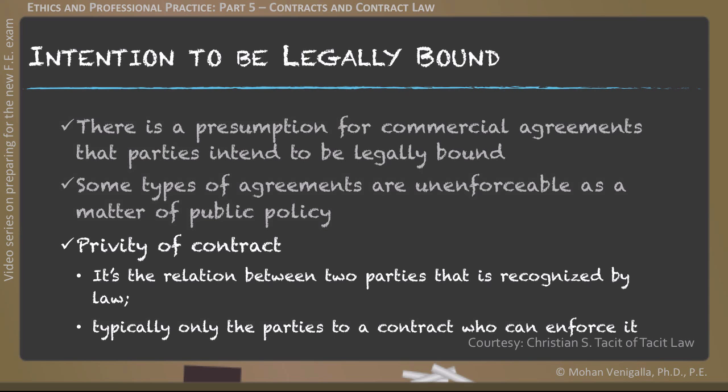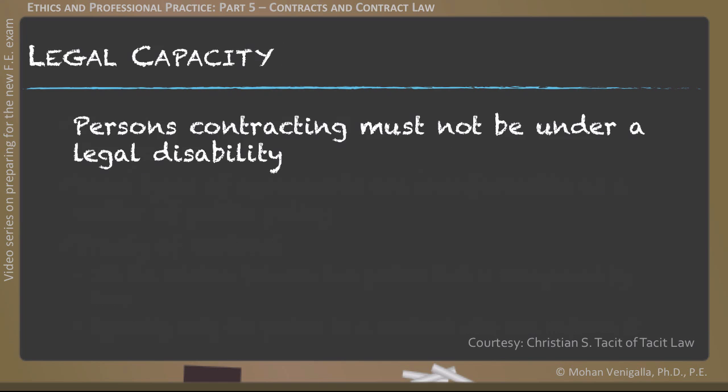For example, on a lease, you have the landlord and the renter — only these two parties can enforce the terms of the lease. Here is a tricky consideration: who can legally enter into a legally binding contract? Those who are contracting must not be under any legal disability. For example, minors or adults who are mentally incapacitated cannot enter into a contract, and even if they do, that contract will be void.